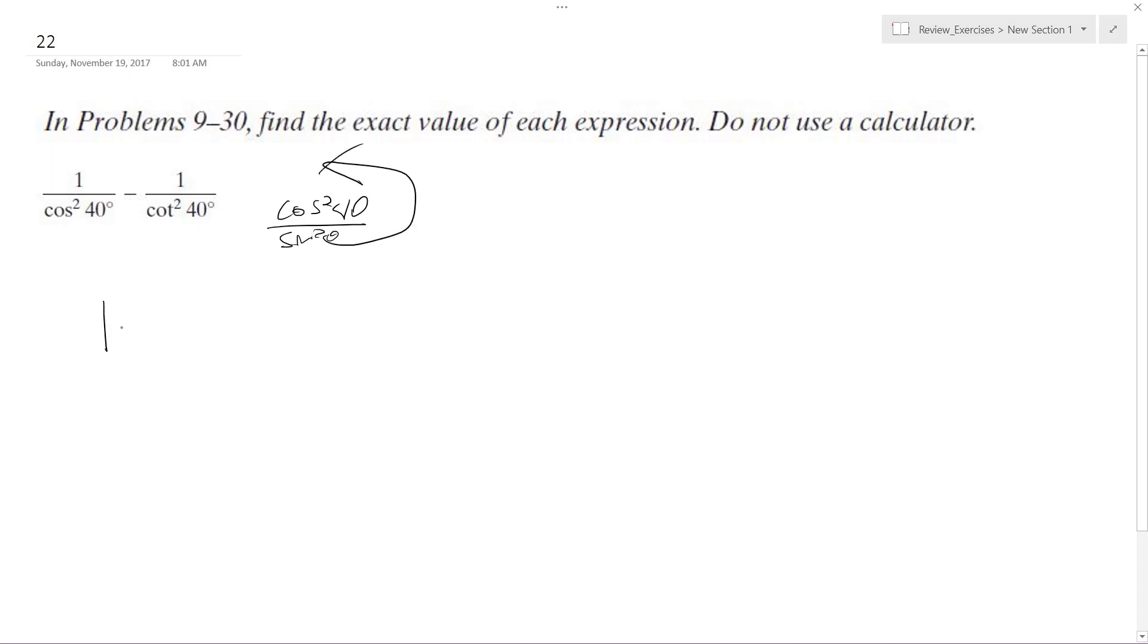So what we end up with is one minus sine squared theta all over cosine squared 40. Well, I should write like this, just so you don't get confused, minus sine squared theta over cosine squared theta.